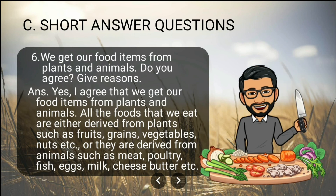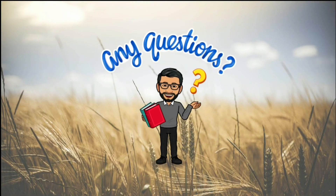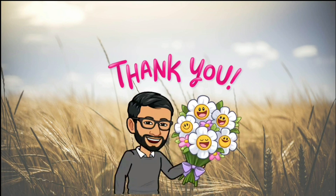Sixth question: We get our food items from plants and animals — do you agree? Give reasons. Yes, all the food that we eat is either derived from plants, such as food grains, vegetables, and nuts, or derived from animals, such as meat, poultry, fish, eggs, milk, cheese, and butter. Students, if you have any questions, feel free to put them in the comment box. Thank you, see you next session!